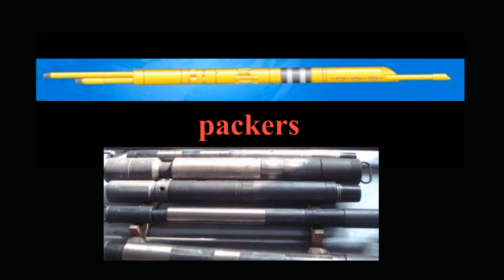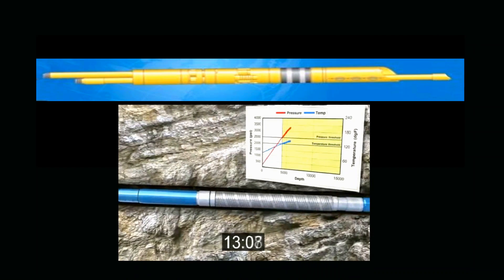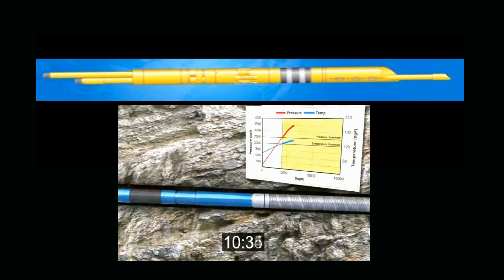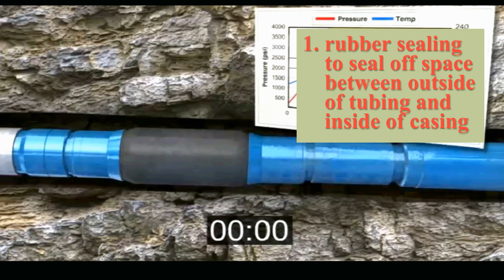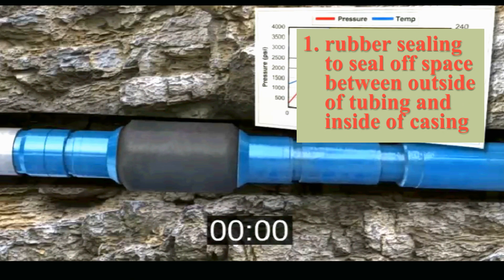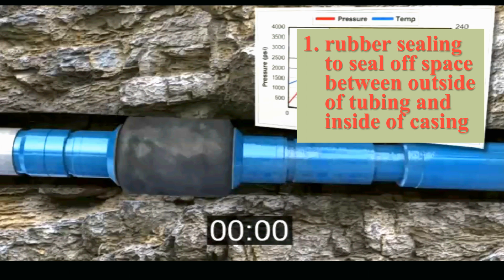Packers come in many configurations and have many functions, but basically they have three things in common. First, each packer is made of a flexible rubber sealing element that closes off the space between the outside of the tubing and the inside of the casing.